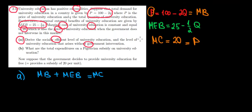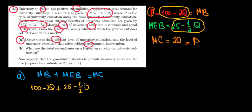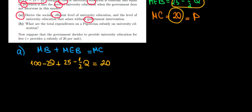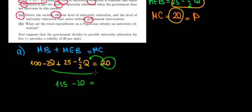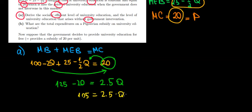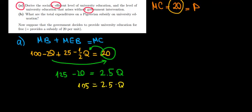To find the social optimal level, we set marginal benefit plus marginal external benefit equal to marginal cost: (100 − 2Q) + (25 − 0.5Q) = 20. That gives us 125 − 2.5Q = 20, so 2.5Q = 105, meaning the quantity under the social optimal level is equal to 42 units.